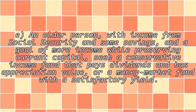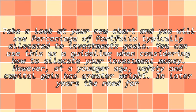If you are an older person with income from Social Security and some savings, and a goal of more income while preserving current capital, seek a conservative income fund that pays dividends and has appreciation value, or a money market fund with a satisfactory yield. Take a look at your new chart and you will see the percentage of portfolio typically allocated to investment goals, which you can use as a guideline when considering how to allocate your investment money.